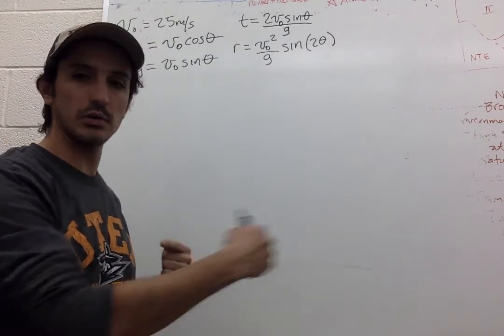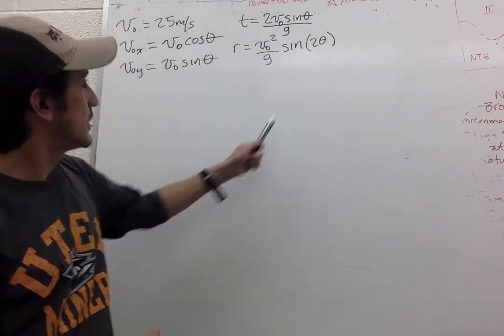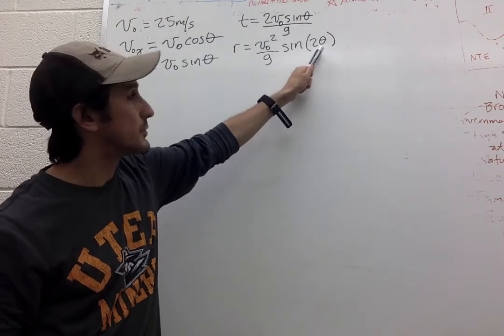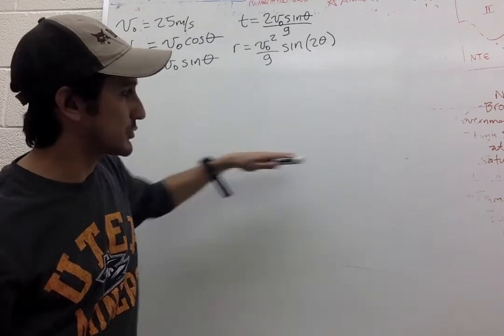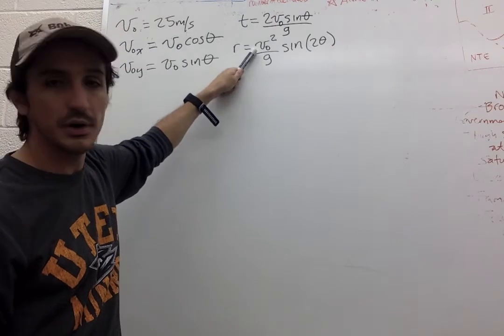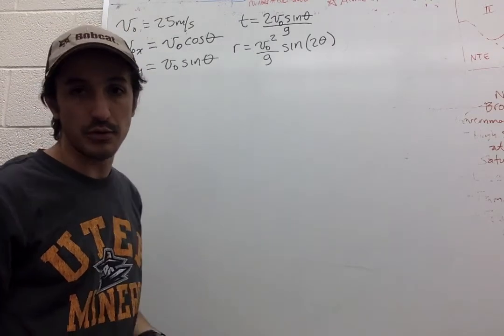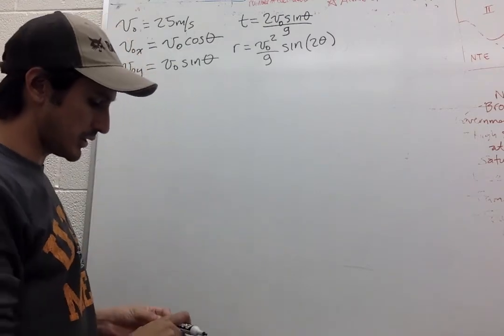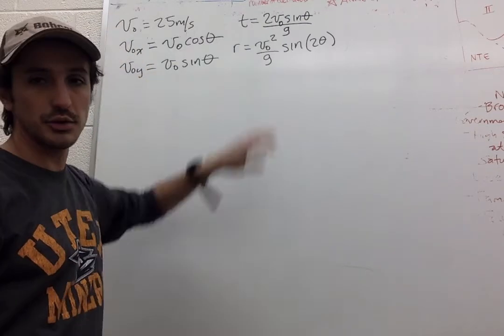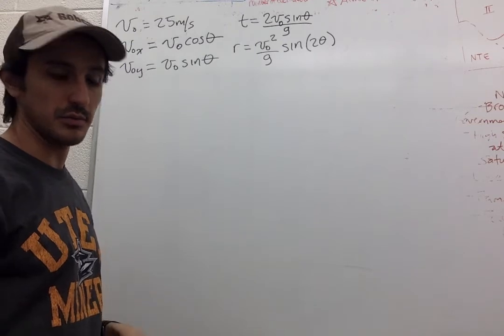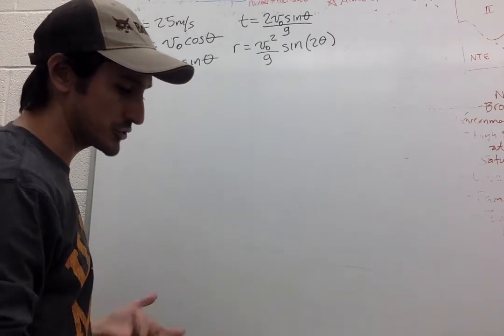So for how long an object will go, it's a function of the angle that it makes with the horizontal, the initial velocity, and the acceleration due to gravity wherever you are. So if you already knew this formula then the problem is much shorter.